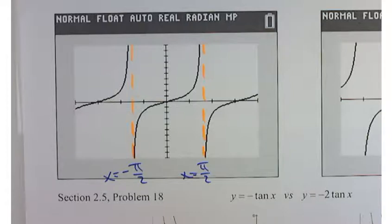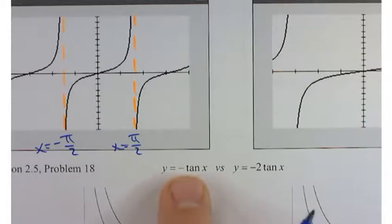For instance, what would happen if I looked at the graph of y equals negative tangent of x? What would that do to my graph? It's going to flip it. Yeah, it's going to flip it.